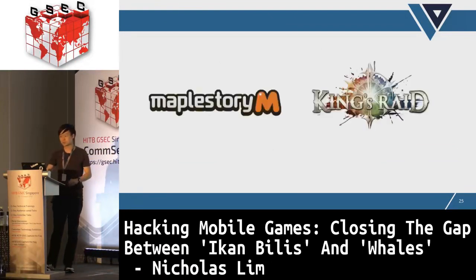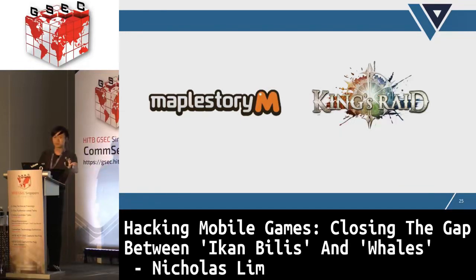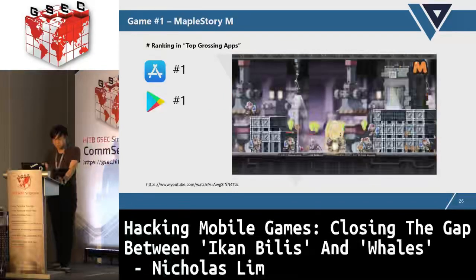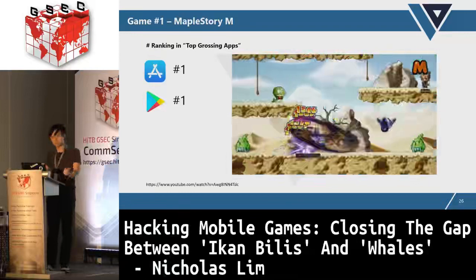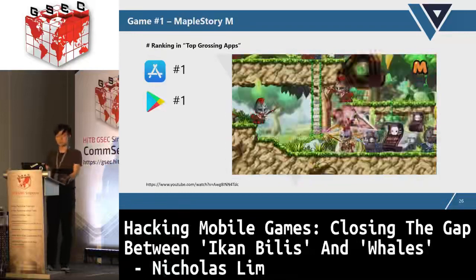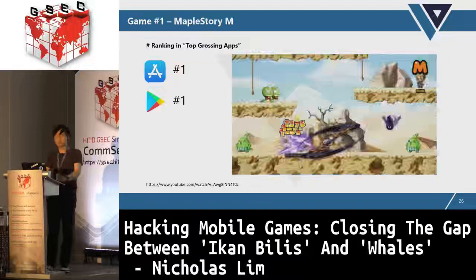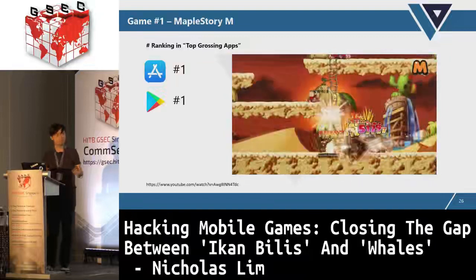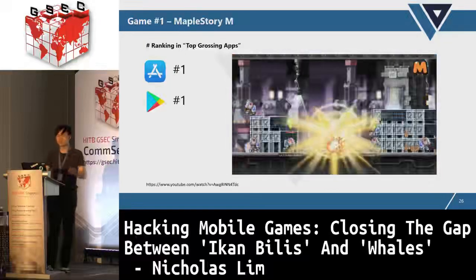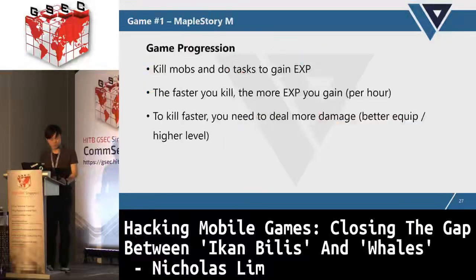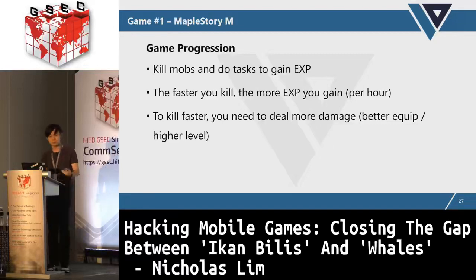Now that we've identified the gap, let's look at real examples. Today I'll be talking about two games: Maple Story M and King's Raid. Maple Story M is currently number one in grossing for both Apple and Google Play — it's a side-scrolling game where you go around fighting monsters. The global release date was last month, so it's very new. The developer is Nexon, who has many years of experience. To progress, you typically kill monsters, do tasks, and gain experience.